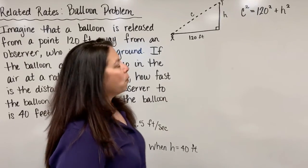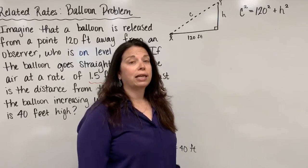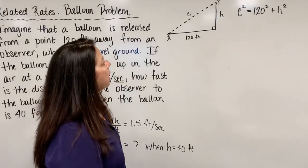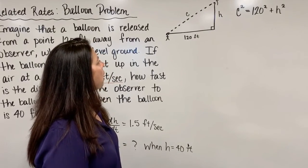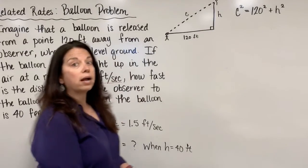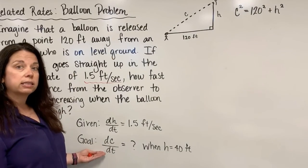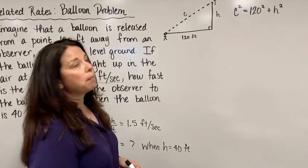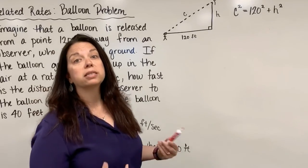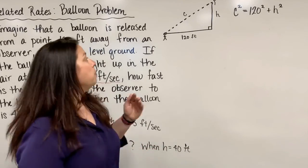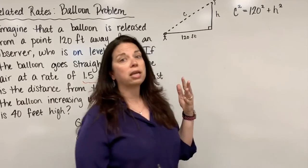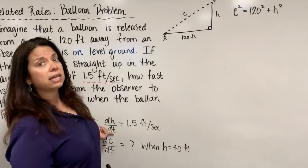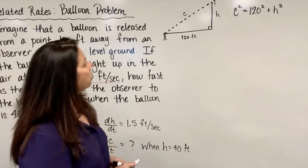What we now want to do is take the derivative of that equation so that we can figure out what our goal is, the dC/dt. When we take the derivative of this equation, we need to use implicit differentiation because what we have here is an equation involving c's and h's, yet we need to find the derivative with respect to t, time.